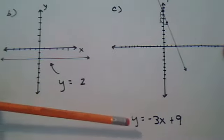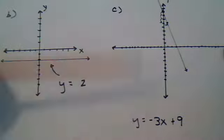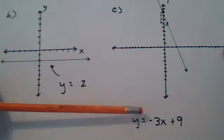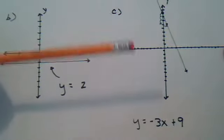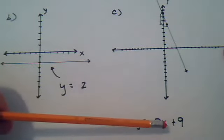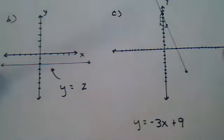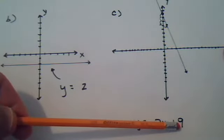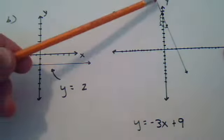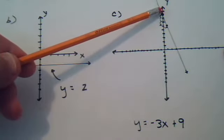And then c, notice this form. This is y equal negative 3x plus 9. That was like A. This is the slope and this is the y-intercept. So notice you always start with the y-intercept. And that's the point on the y-axis. So you go up all the way to 9.